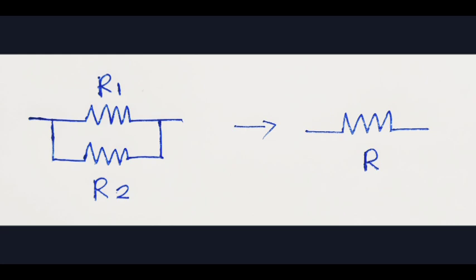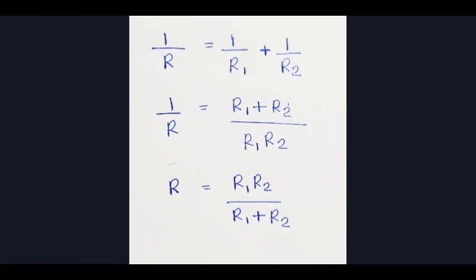1 by R is equal to 1 by R1 plus 1 by R2. That means R is equal to R1 R2 by R1 plus R2. So, for series connection, effective resistance is R1 plus R2. For parallel connection, effective resistance is R1 R2 divided by R1 plus R2.